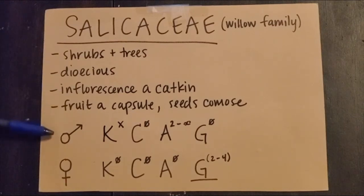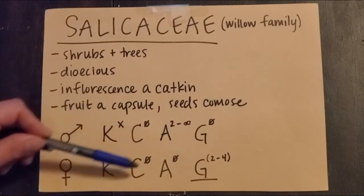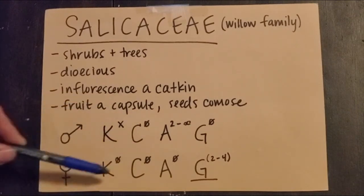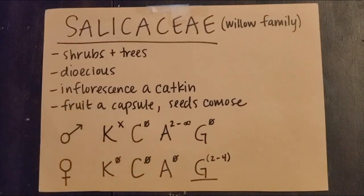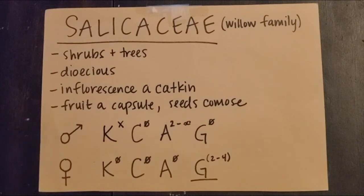Then we have our floral formula for our staminate, or male flowers, and the floral formula for our pistillate, or female flowers. You can see in both there is no perianth present — it is absent in both the male and female flowers. For the male flower, we have two to infinity, so two to greater than ten stamens. No gynoecium, of course, because it's just a male flower.